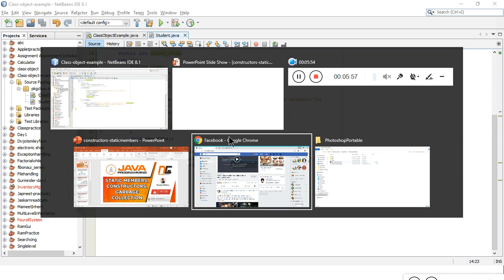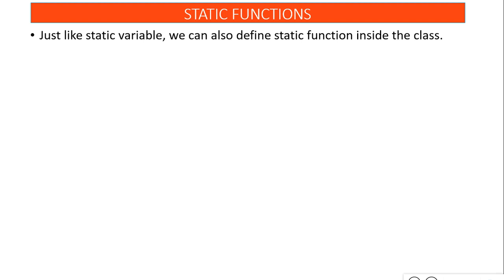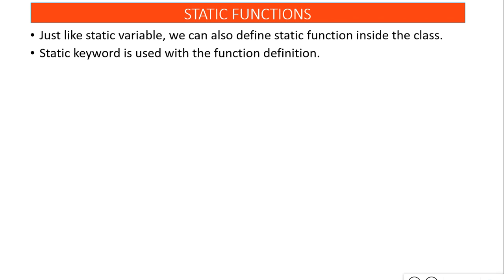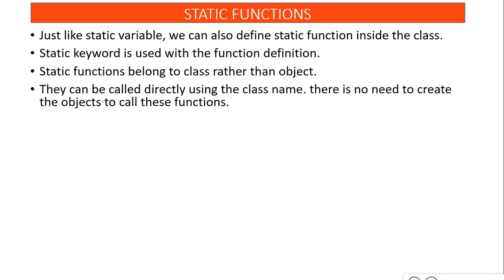Now let's move to static functions. Just like static variables, we can have static functions. You define a static keyword in front of the function. You've already seen this in the main function definition: public static void main. Static functions belong to the class rather than an object and can be called directly using the class name. That's why we use static with main — the main function gets executed even without creating an object of that class.